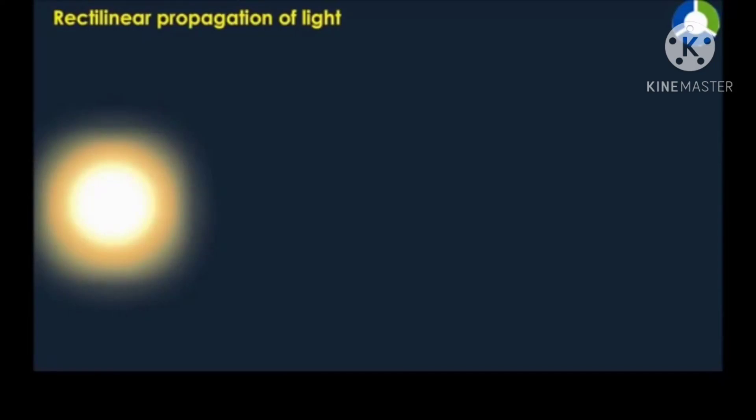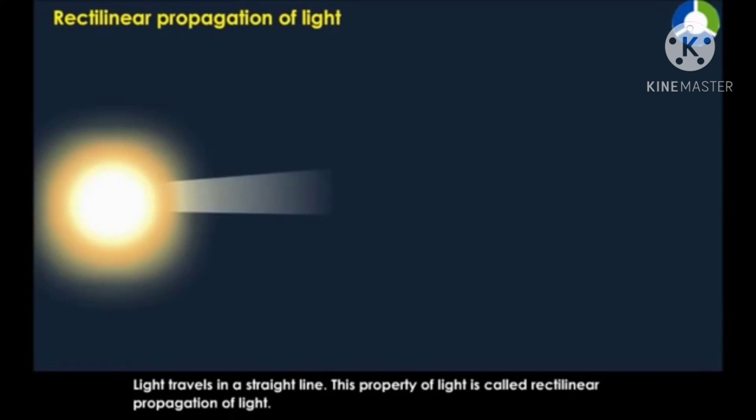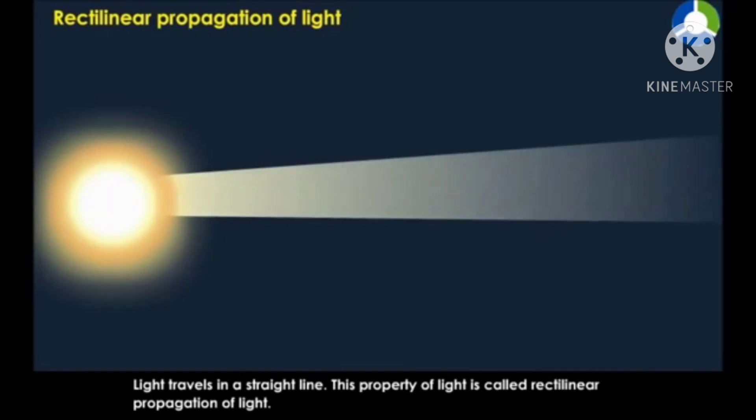Rectilinear propagation of light. Light travels in a straight line. This property of light is called rectilinear propagation of light.